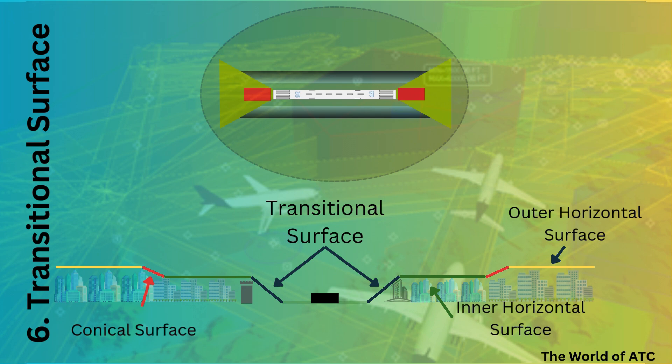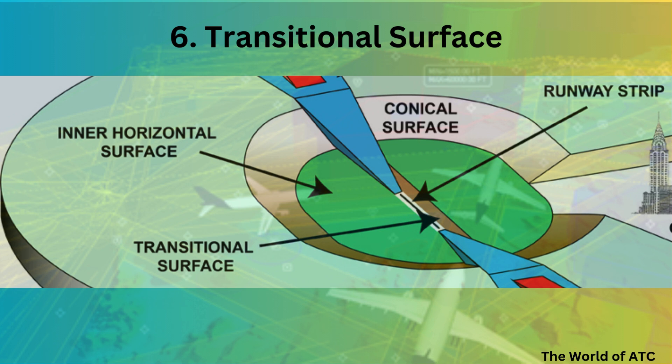In the picture you can also see the transitional surface. One thing to highlight is that the transitional surface is similar to the conical surface, but the conical surface joins the inner horizontal surface with the outer horizontal surface at a slope of 5%, while the transitional surface joins the ground or edge of the strip to the inner horizontal surface at a slope of 14.3%. What we have studied applies to aerodromes with runway reference code 3 or 4.